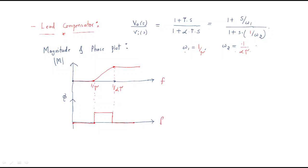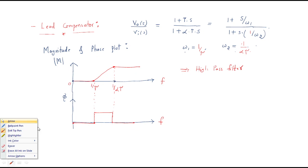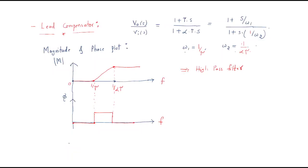If you observe the gain here: at low frequency it is less, and when the frequency increases the gain increases. That's why we can name it a high-pass filter, because high frequency signals get more gain. We have two frequencies W1 and W2, and from these two frequencies we will get the maximum frequency, which is the square root of W1 and W2.